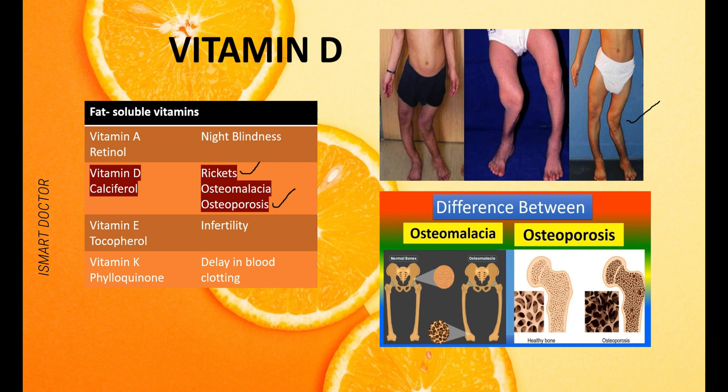Vitamin D deficiency also causes osteomalacia — a loss of calcium and inorganic salts from bones — and osteoporosis, which involves demineralization and loss of bone bulk density. So typical diseases for Vitamin A are night blindness, and for Vitamin D are rickets, osteomalacia, and osteoporosis.